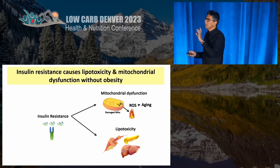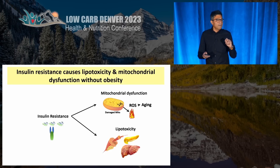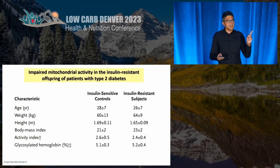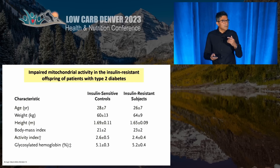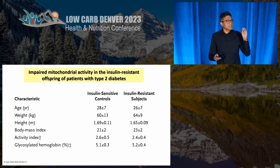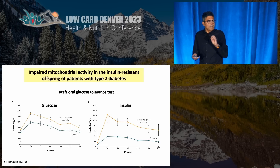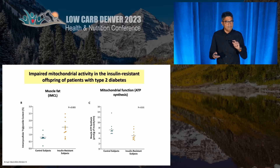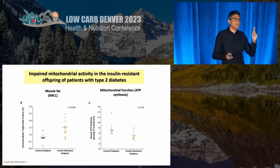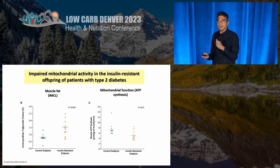You don't need to actually become obese to have insulin resistance and lipotoxicity. This study looked at offspring of type 2 diabetics compared to lean controls. Even though they were similar in age, weight, and hemoglobin A1c, on a Kraft glucose tolerance test these individuals had higher sugars and higher insulin at each time point, indicating insulin resistance. This was accompanied by high amounts of muscle fat and lower ability to generate ATP — in other words, poor mitochondrial function.